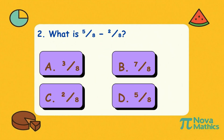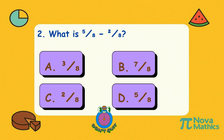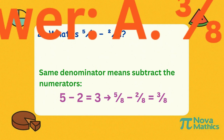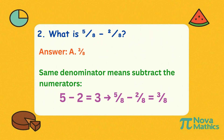Two. What is five-eighths minus two-eighths? Since the bottom numbers match, we subtract the top numbers. Five minus two is three, so it's three-eighths.